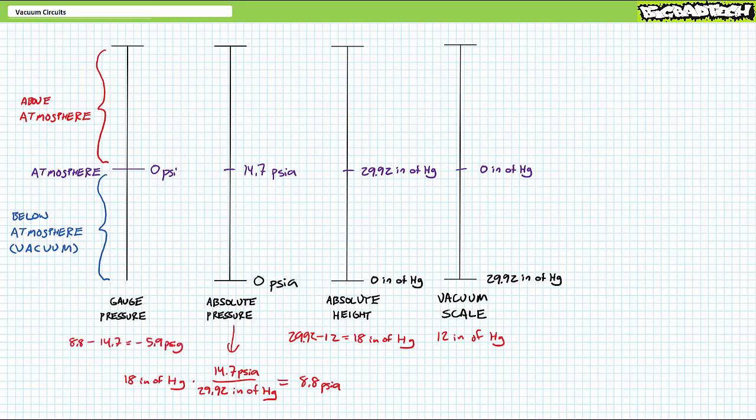If you wanted to keep going with this and express this using the gauge scale, you'd be below zero PSI gauge or in negative territory, which makes a perfect sense because it's a vacuum, something less than atmosphere, where 8.8 PSI absolute is roughly equivalent to negative 5.9 PSI gauge.